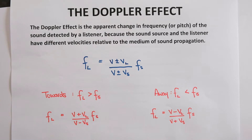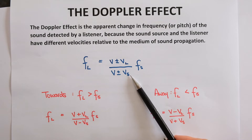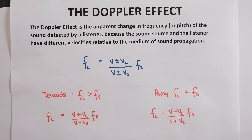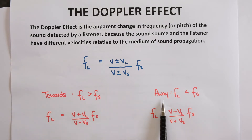For your examples, either the velocity of the listener or the velocity of the source will be zero — one of these two will be stationary. Either the observer or the source will be stationary. So you will have one of two scenarios: one object will be moving towards the other, or away from the other. Those are your two types of examples.